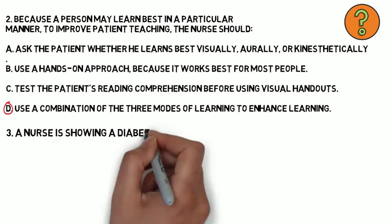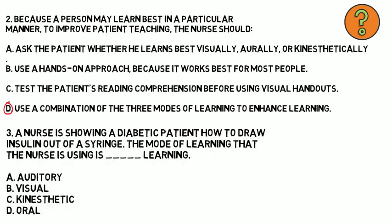Question 3. A nurse is showing a diabetic patient how to draw insulin out of a syringe. The mode of learning that the nurse is using is blank learning. A) Auditory learning. B) Visual learning. C) Kinesthetic learning. D) Oral learning. The correct answer is B, visual learning. Visual learning is based on learning through what the learner sees, so the patient is seeing the nurse draw the insulin out of the syringe, so it's visual learning.